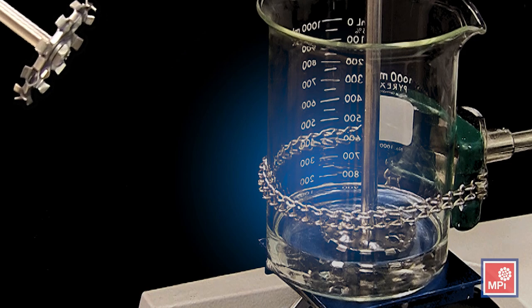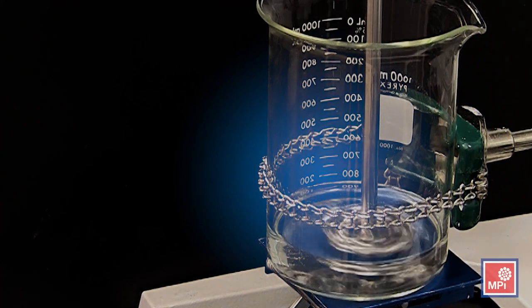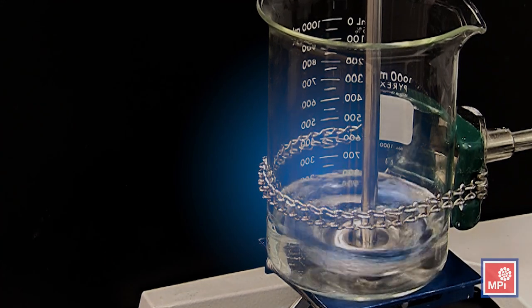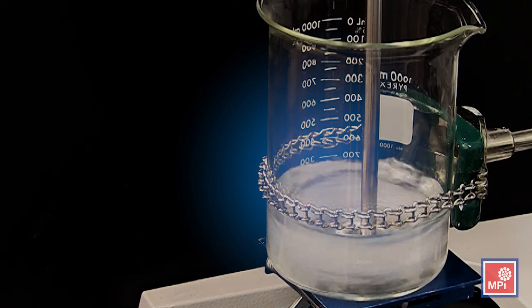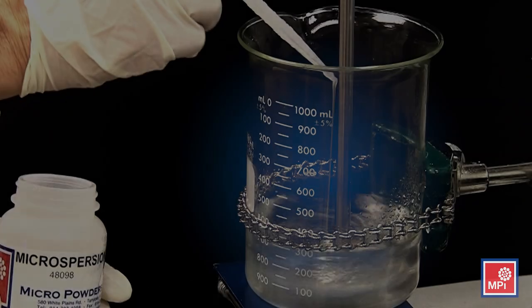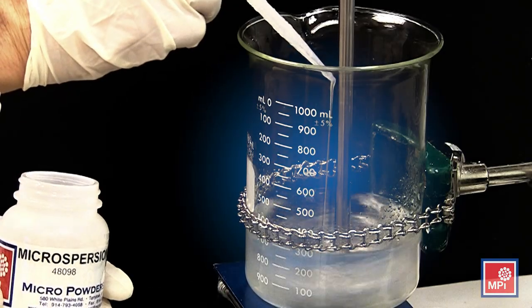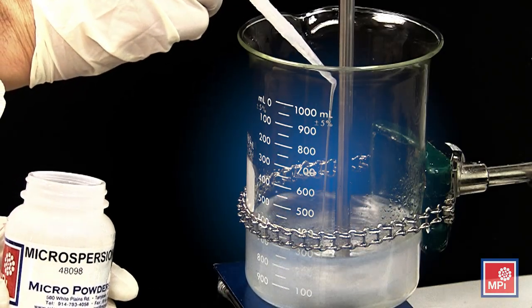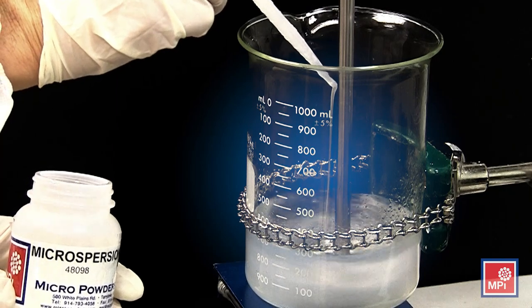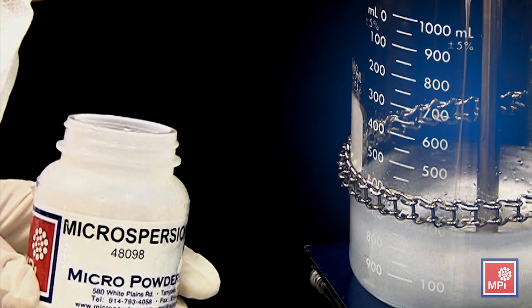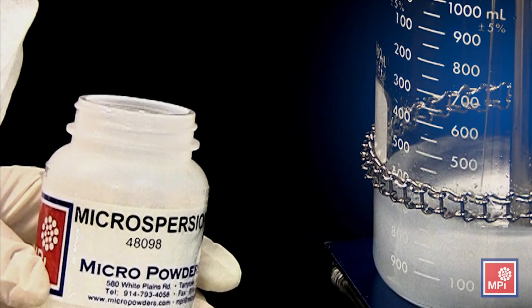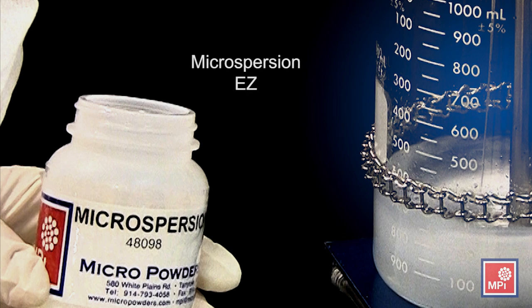Next, we add a surfactant or wetting agent to the water while mixing it at 1000 revolutions per minute. In this formulation we're using Micro Powders Microspersion Easy as the surfactant. This will reduce the surface tension of the water, allowing intimate contact between the water phase and each of the wax particles.